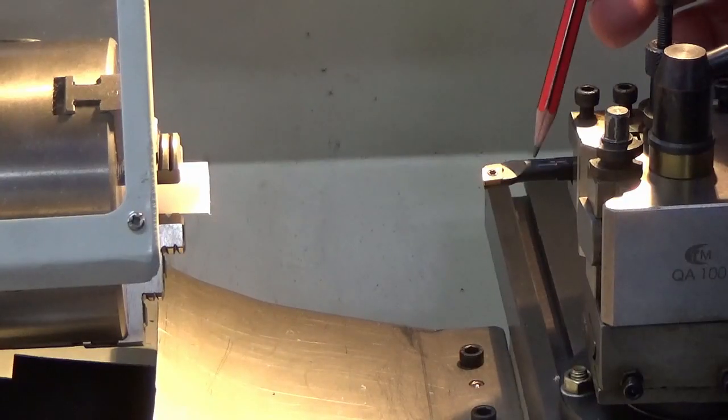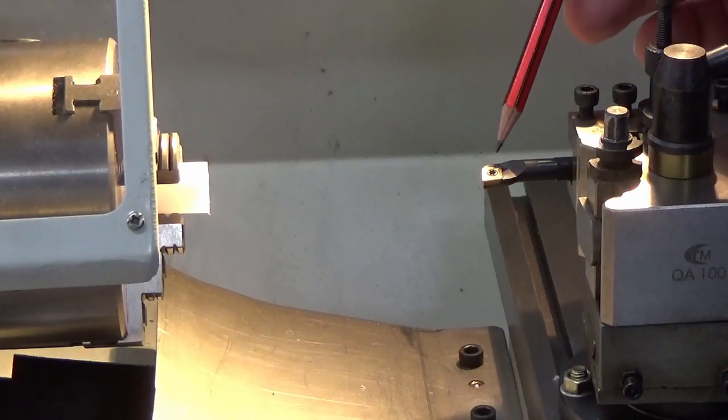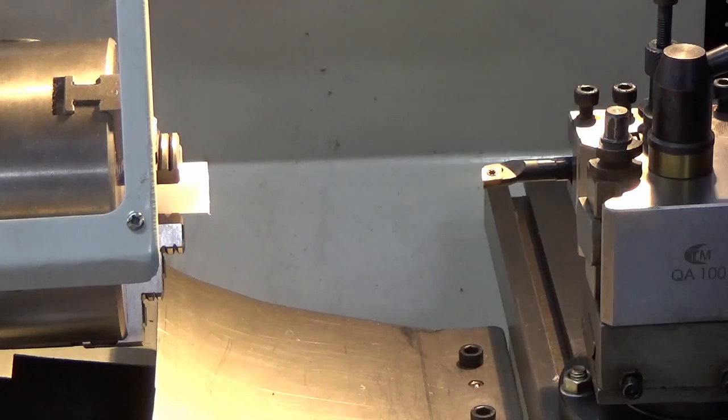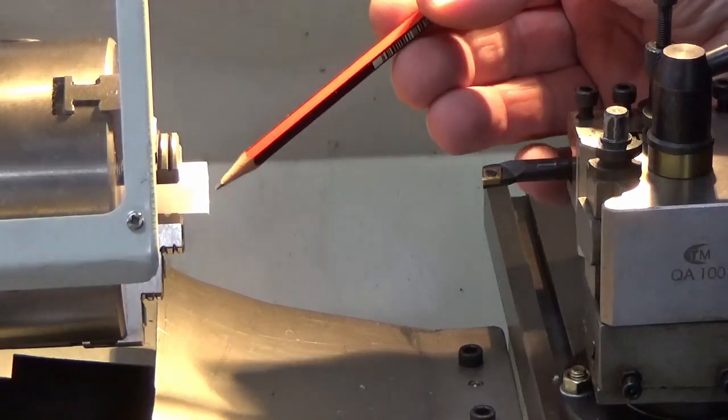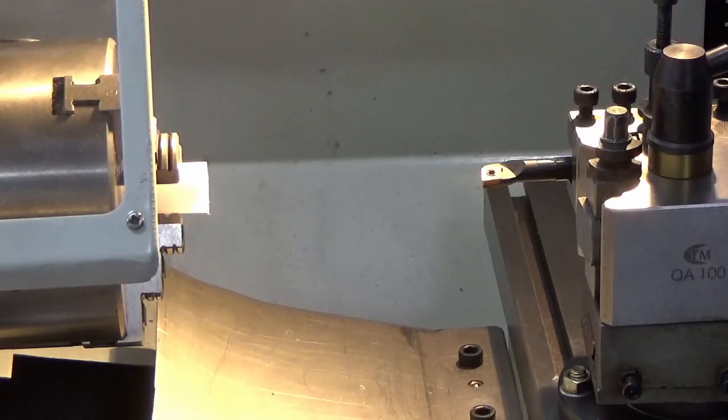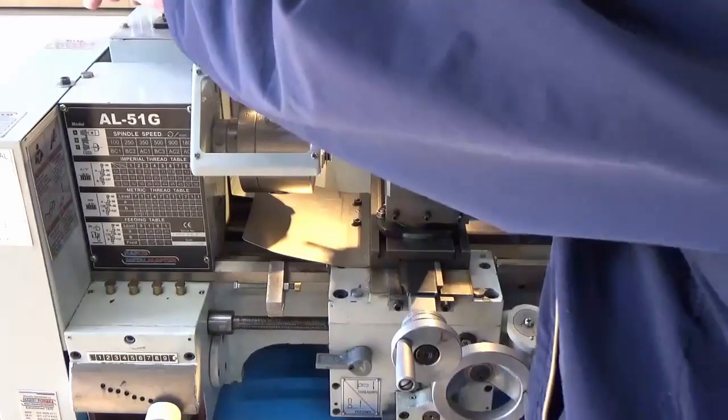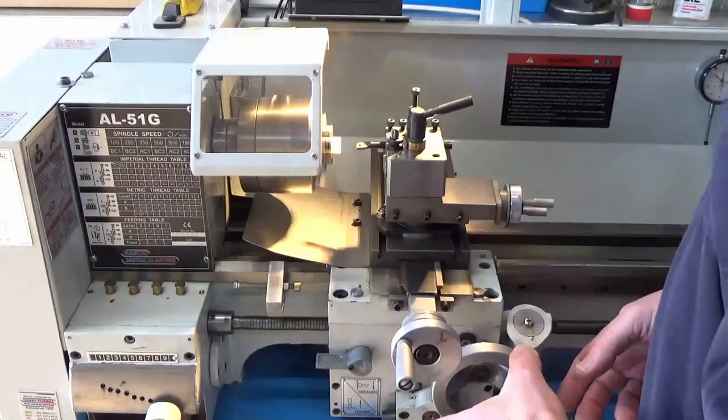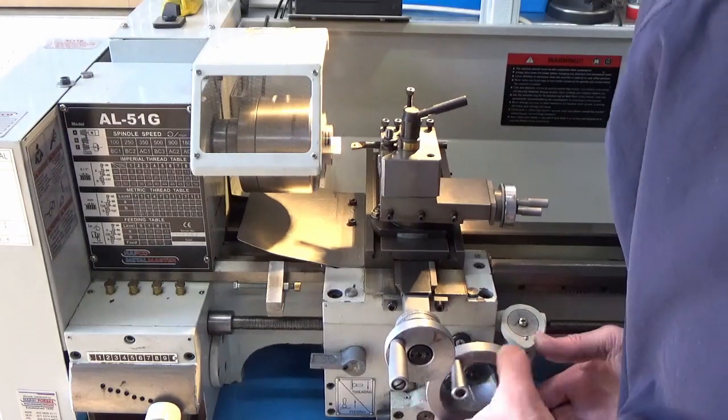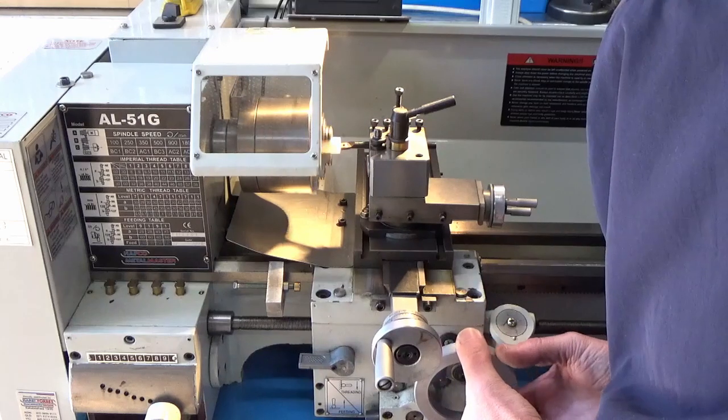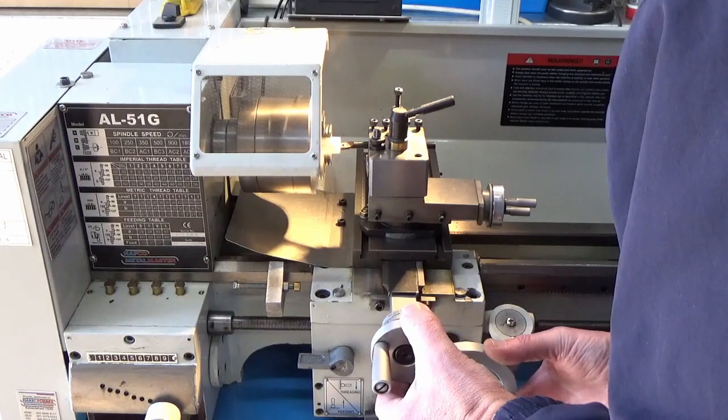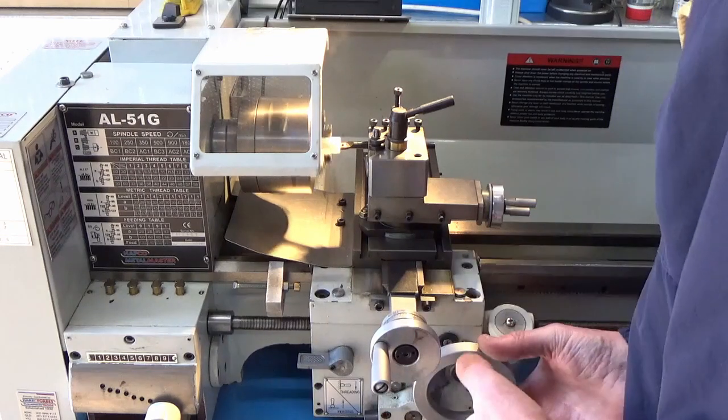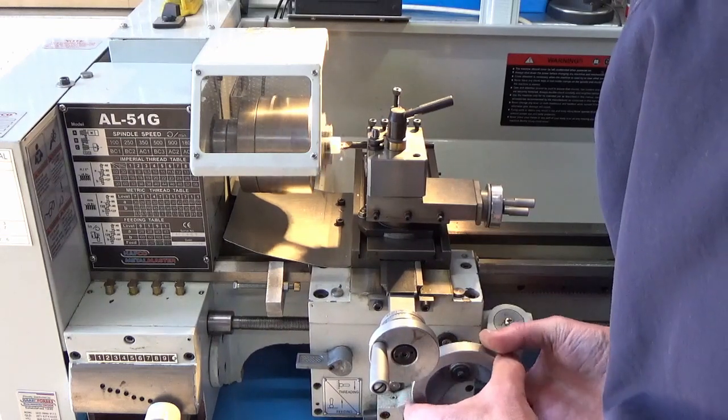So we set up our boring bar. Now this is the smallest of the standard boring bars I've got and it just fits in. So we're going to bring this out to 11.5mm, so we've got about a 0.5mm fit. We're just going to do a touch off. Just going to take that through.